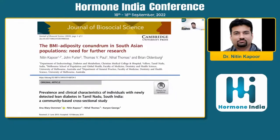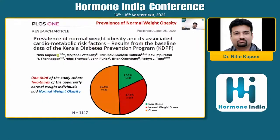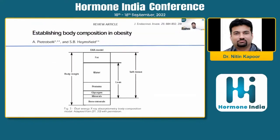This is a study we did a couple of years ago looking at the prevalence of lean diabetes — people who are thin, not having type 1 diabetes, but type 2 diabetes at a low BMI — and how this is common in the Indian setting. Another study looked at the prevalence of normal weight obesity: people with a normal BMI and high body fat. To our surprise, we found that about two-thirds of people with a normal BMI in this cohort actually had a high body fat percentage. The prevalence of diabetes, hypertension, and sarcopenia in these people was significantly higher than in those who are non-obese.